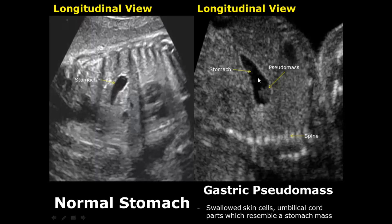Over here we have the gastric pseudomass seen in longitudinal view, due to swallowed materials such as skin cells, blood, or parts of the umbilical cord. And here is the fetal spine.